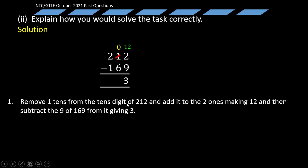You remove one tens from the tens digit of 212, because you can see that this is the tens column, this is the hundreds column, and this is the ones column. So you first of all remove one from the tens column and add it to the ones column because we cannot subtract 9 from 2.